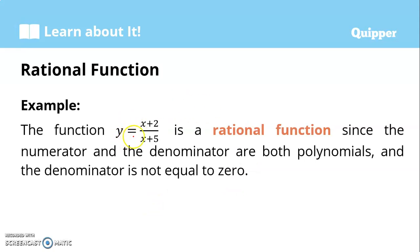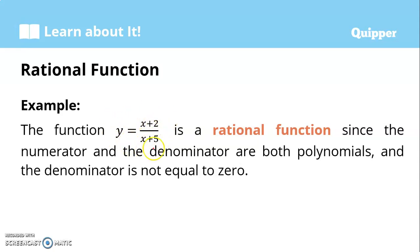For example, the function y = (x + 2) / (x + 5) is a rational function since the numerator and the denominator are both polynomials. See, the exponent of x in the numerator is 1 and the exponent of x in the denominator is also 1 — both whole numbers, so they are both polynomials. The denominator x + 5 is not equal to 0 when simplified, so therefore this function is a rational function.